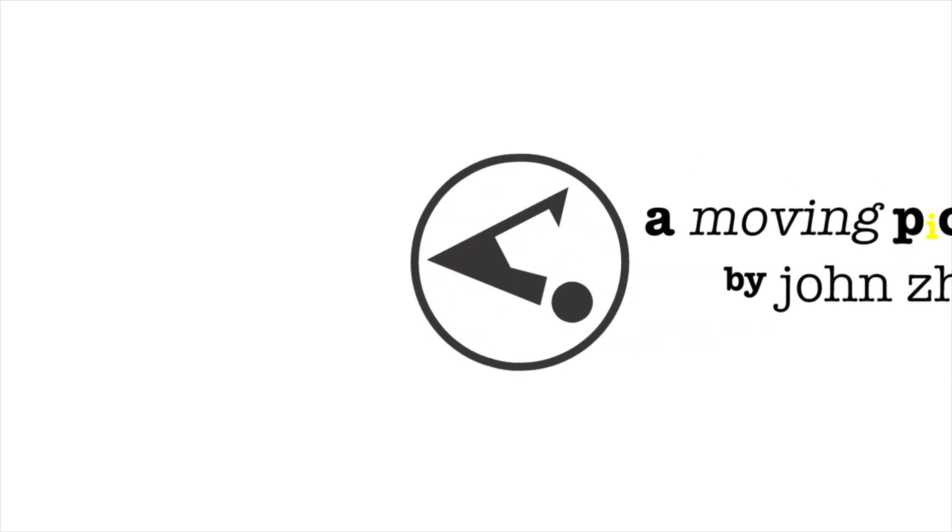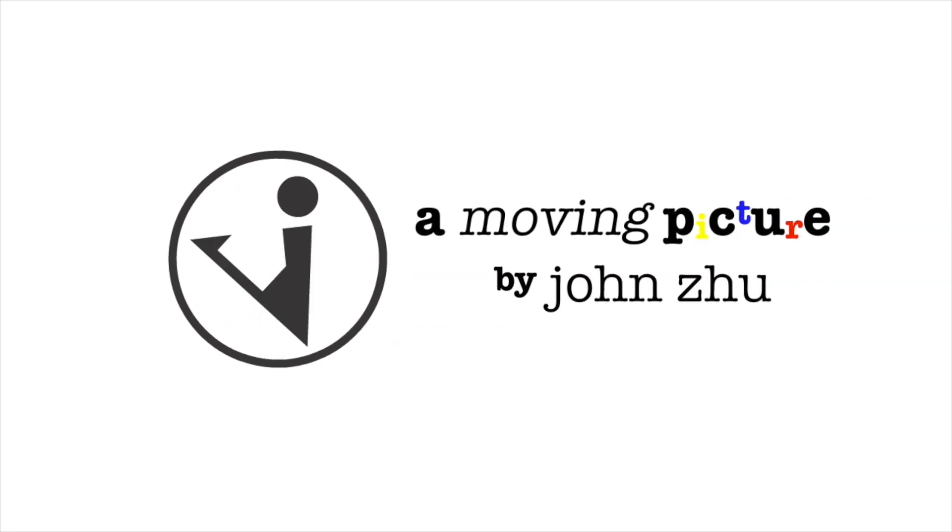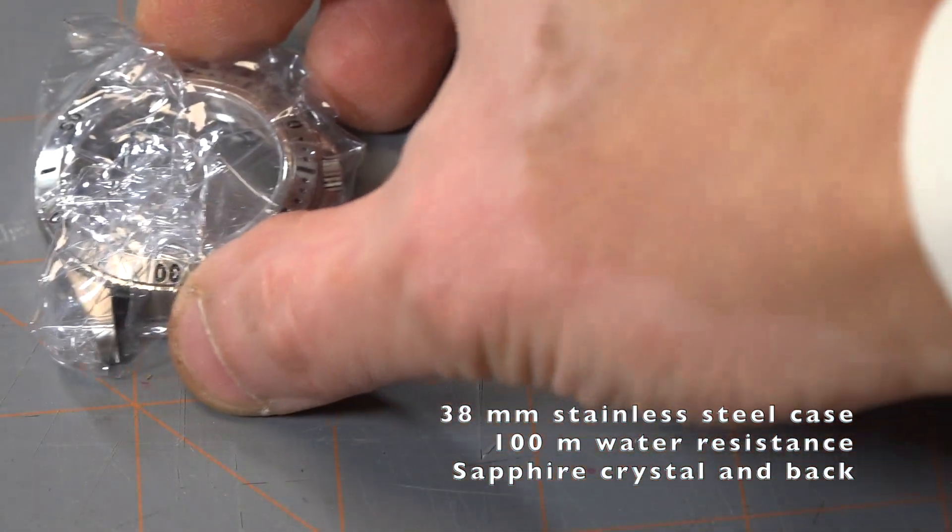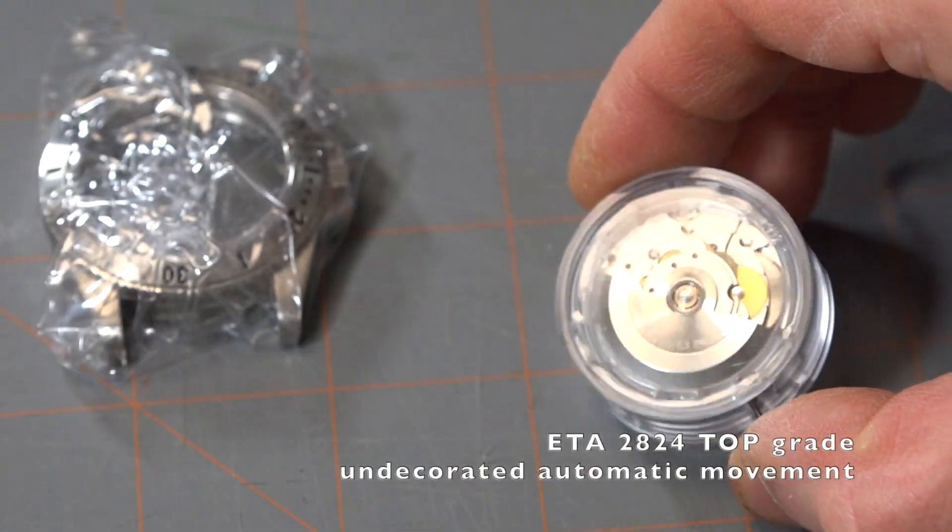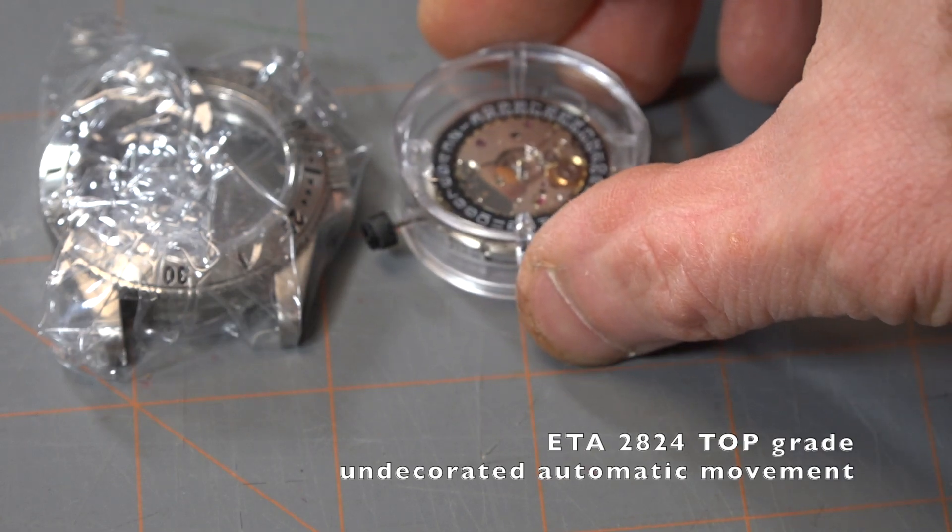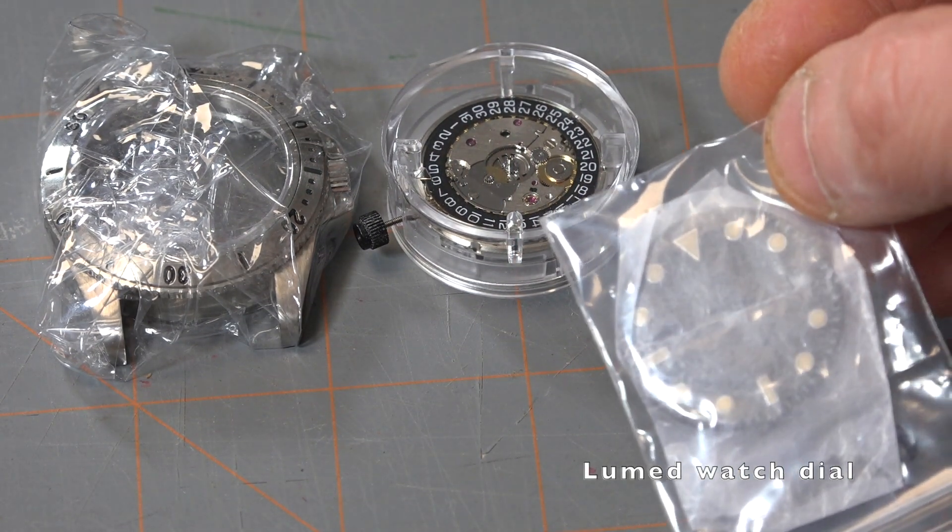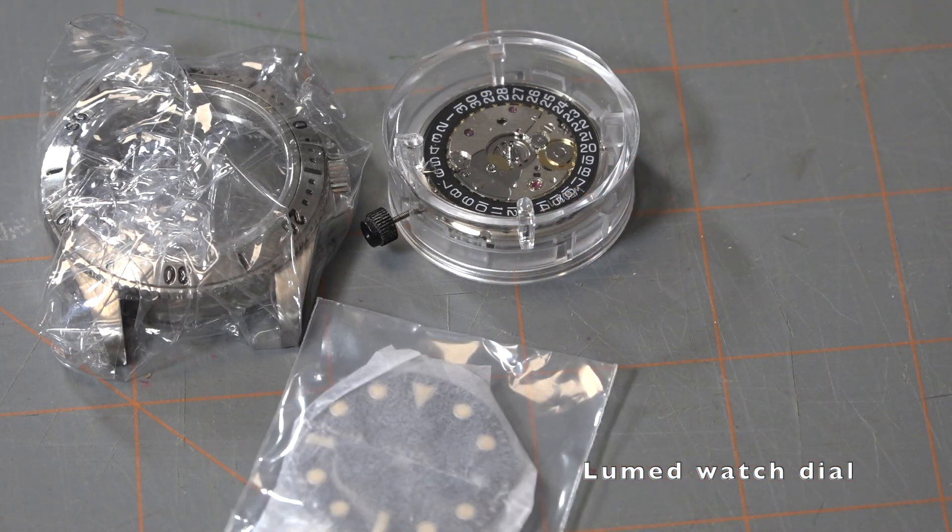Hello everyone, today I want to show you how I made this mechanical watch. In the description you will find a complete list of parts, so let's get going. I got a 38 millimeter case with sapphire top and bottom, front and back, and has a screw down crown.